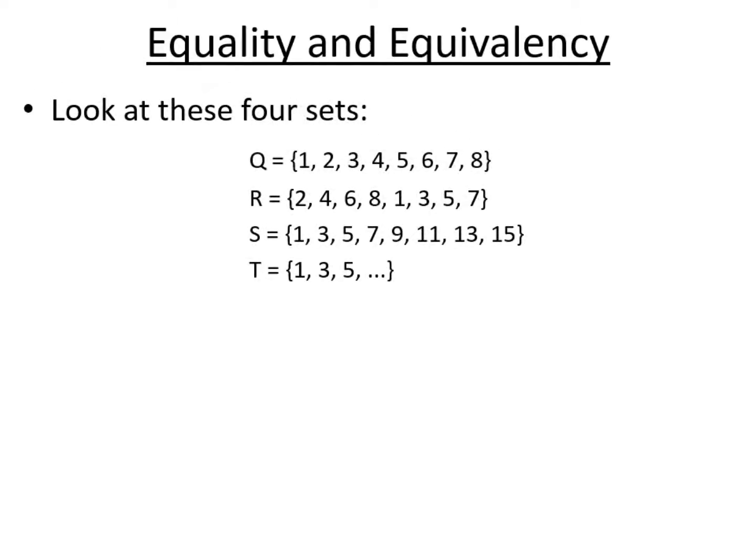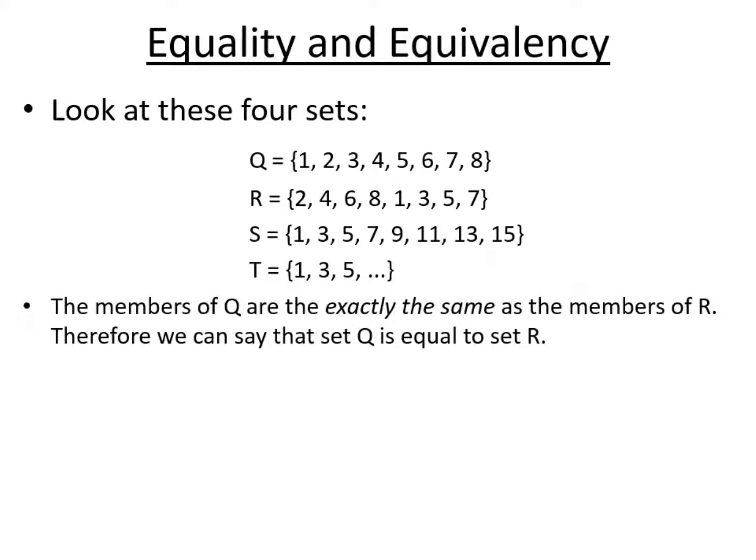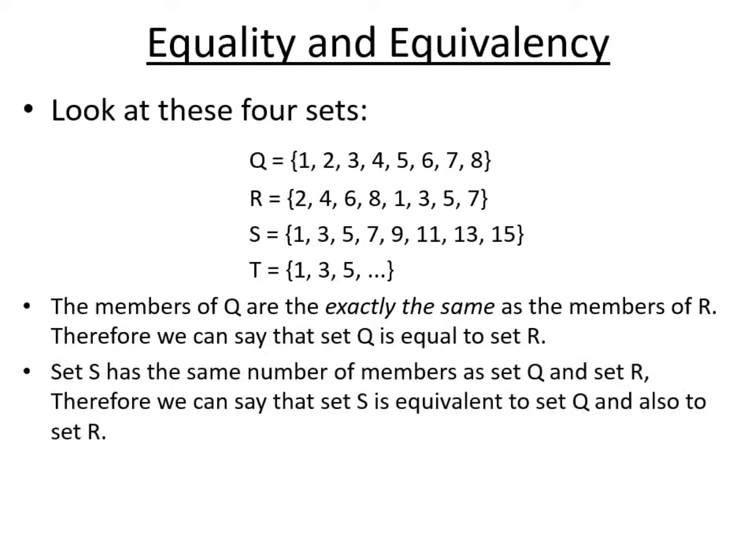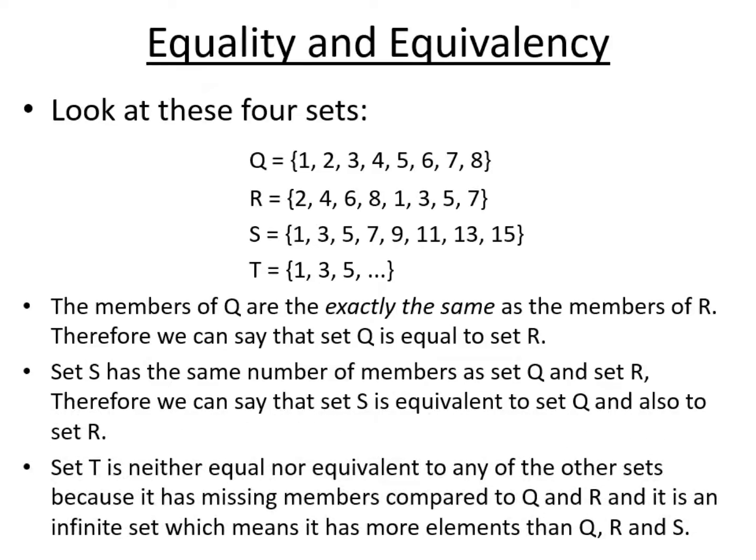We need to draw another distinction between equality and equivalency of sets. If we look at these four sets we can see the first two sets Q and R both contain the numbers one to eight. All of them are there, they're just in a different order, so we can say that set Q is equal to set R. It has exactly the same members even if they're in a different order. On the other hand set S, if you count the members, it has eight members, the same number of members as sets Q and R, so we can say it is equivalent. Set T is an infinite set and so it has neither the same number of members or the same members exactly as sets Q, R, or S, so it's not equal or equivalent to any of them.